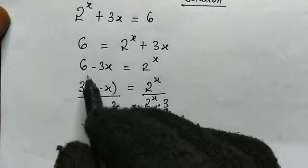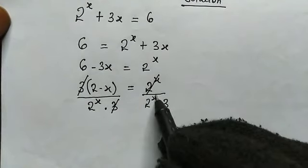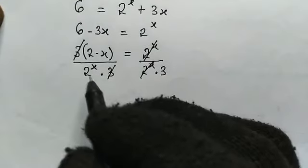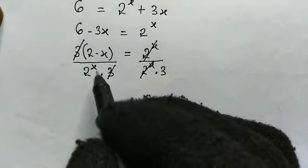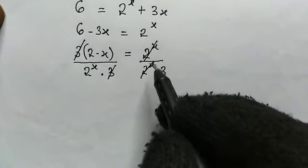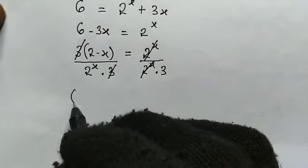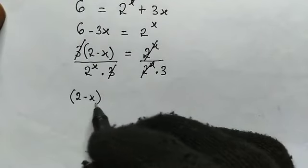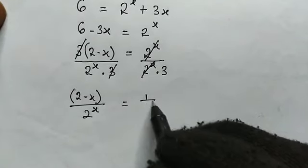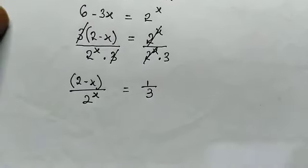Look at the reason here: this 3 will cancel this 3, and this 2 to the power of x will cancel this 2 to the power of x. So we can see that anything involving x — whether the power or the coefficient — is at the left hand side, and constants or numbers are at the right hand side.